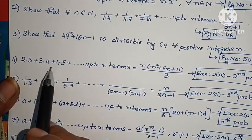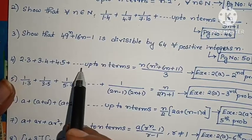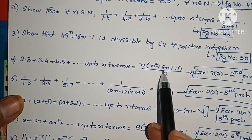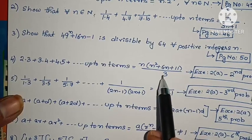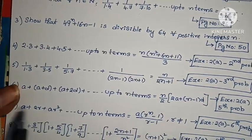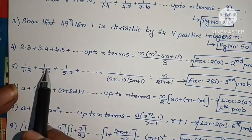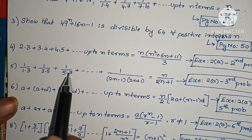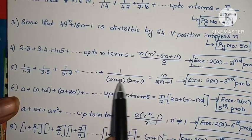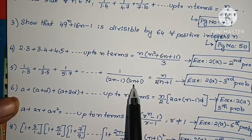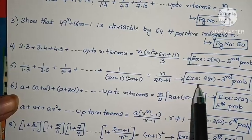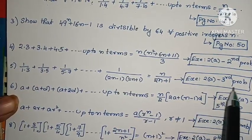Fourth problem: 2 into 3 plus 3 into 4 plus 4 into 5 plus and so on up to n terms equals n into (n squared plus 6n plus 11) divided by 3. Fifth problem: 1 by (1 into 3) plus 1 by (3 into 5) plus 1 by (5 into 7) plus and so on plus 1 by (2n minus 1)(2n plus 1) equals n by (2n plus 1).